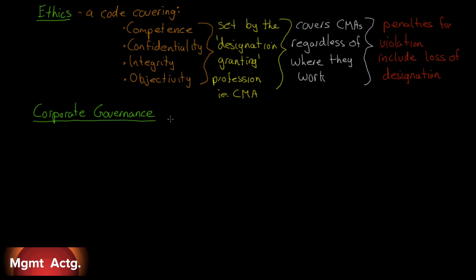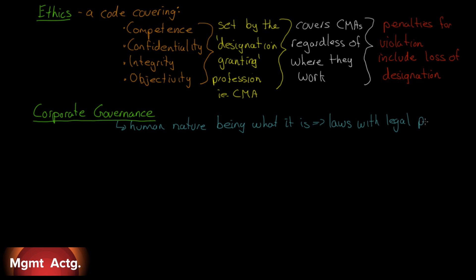Corporate governance is your board of directors — they're there to ensure that management works in the best interest of stakeholders. But human nature being what it is, if you're on the board of a large corporation and your pay for 15 or 20 hours of work a year is around $100,000 plus stock options, you may just agree with everything and turn a blind eye. Unfortunately, over the last 15 years, laws with legal penalties have replaced what used to be moral and ethical guidelines.